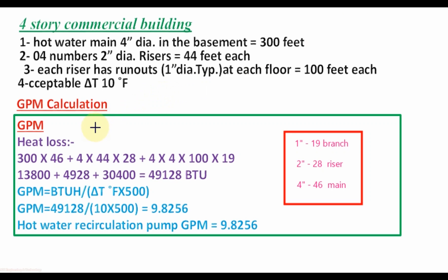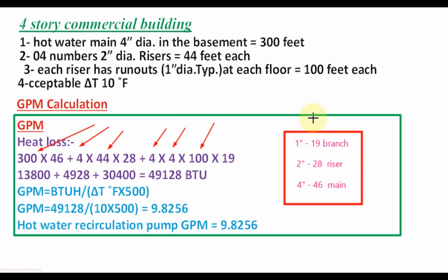The 4 inch diameter pipe at the basement is 300 feet. Each of the 4 risers is 44 feet at 2 inch diameter. There are 4 branches per riser, 16 branches total, each 100 feet at 1 inch diameter. Applying the heat loss rates — 19 BTU/hr/ft for 1 inch, 28 for 2 inch, and 46 for 4 inch — and multiplying by piping lengths, the total heat loss in the hot water supply piping equals 49,128 BTU per hour.